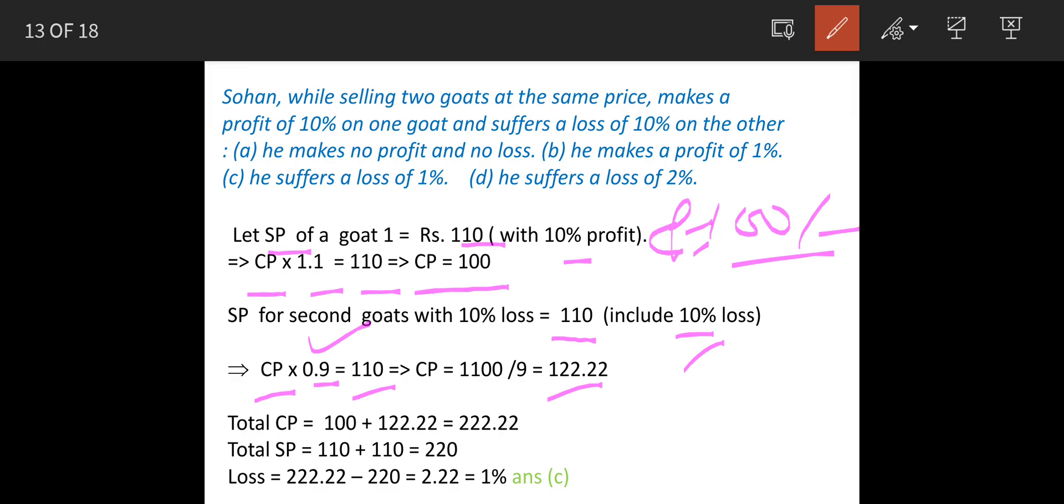So total cost price for two goats is 100 plus 122.22, which is 222.22. This is the cost price, and the sale price is 110 and 110, which is 220.